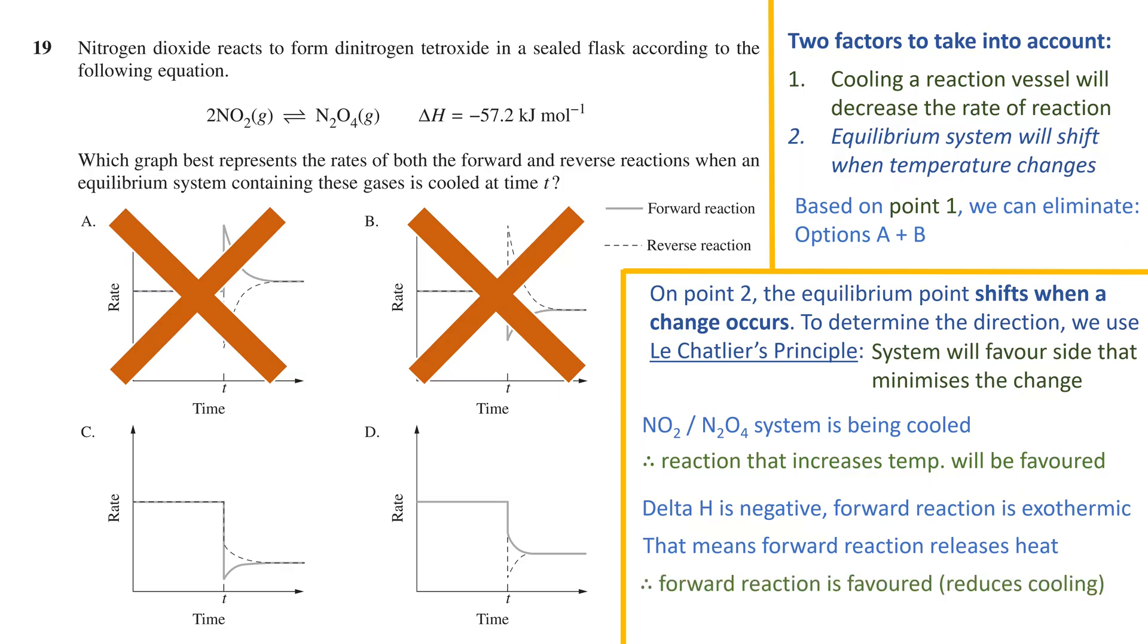That means, of the two options we have left, we need to choose the one that shows a preference for the forward reaction. As we have established, both forward and reverse reactions will decrease at time t, but the one that doesn't decrease as much, or in other words, has a higher rate before it reaches equilibrium, will be the option we are looking for.